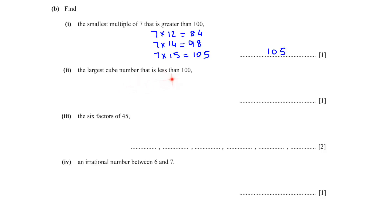The largest cube number that is less than 100 - again write in the calculator and check. 4 cube is 64, 5 cube is 125. So which is the largest cube number that is less than 100? 64.